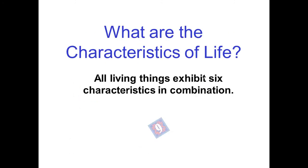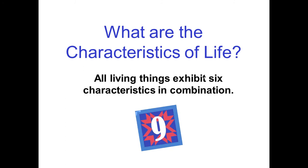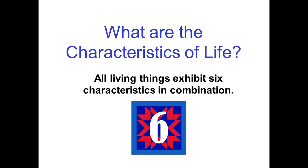So what are the characteristics of life? All living things exhibit six characteristics in combination. You have to remember that a living thing does not just have four out of the six or five out of the six — it has to have all six.